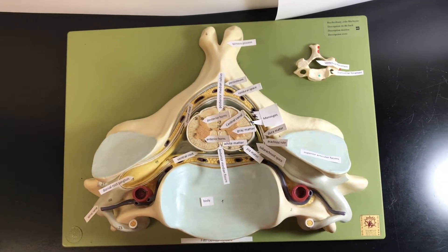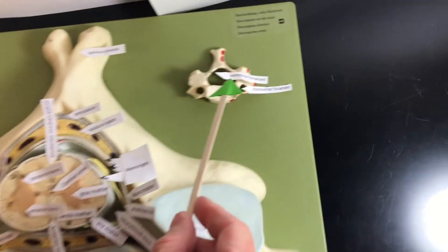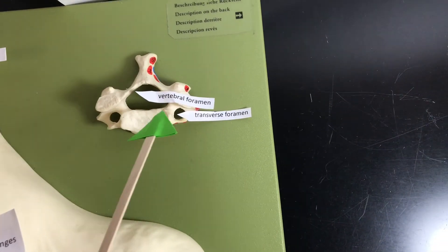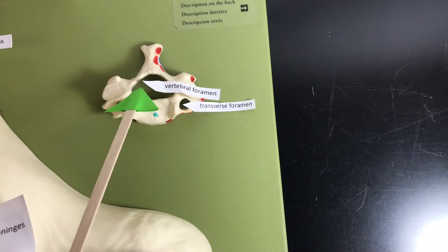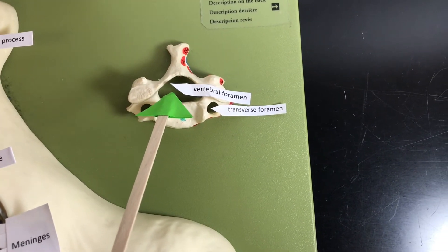This is a tour of the cervical vertebrae model with the spinal cord. Here's a cervical vertebrae. Here's the vertebral foramen. So the spinal cord goes through the vertebral foramen of the vertebrae.